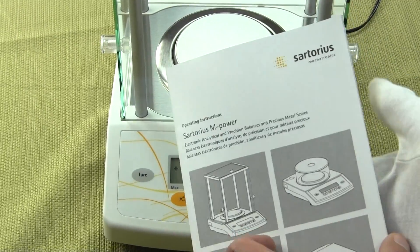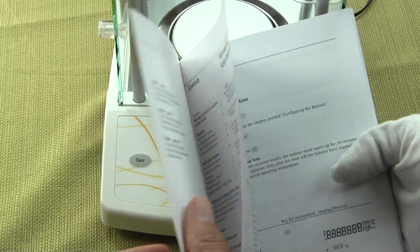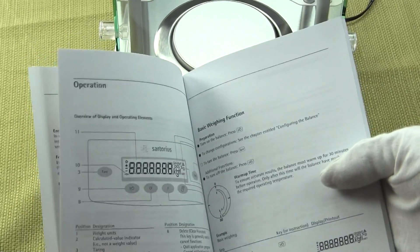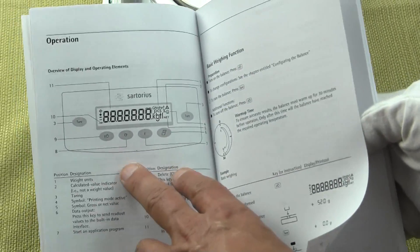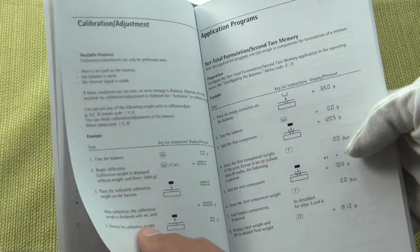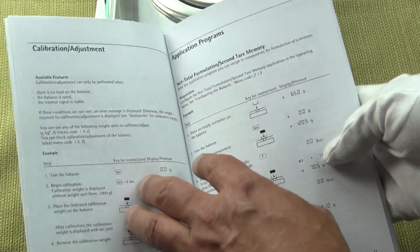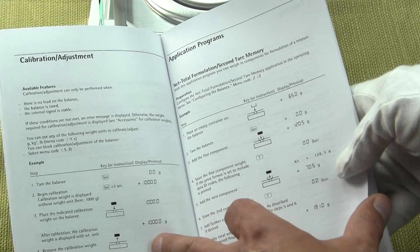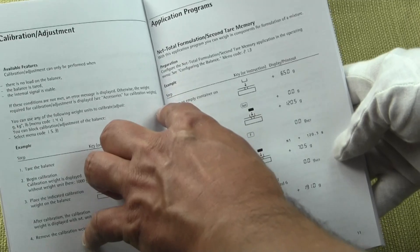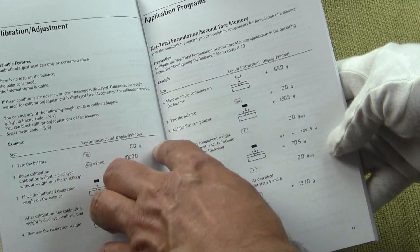The manual, very simple, step-by-step instructions, very well detailed. Again, Sartorius does a great job explaining all the key functions. And if you wanted to get into application modes and how to set it up, this is net formulation. You can see Sartorius gives you step one, two, three.